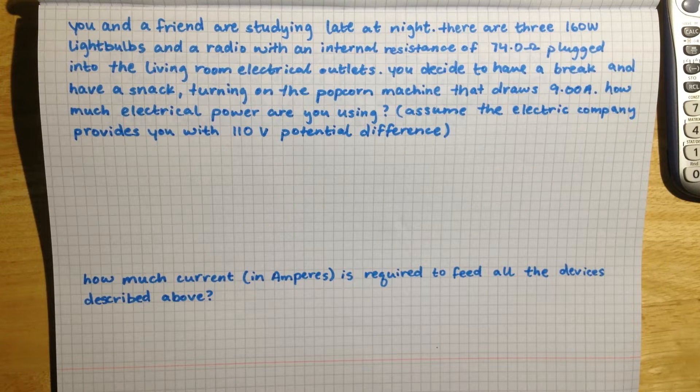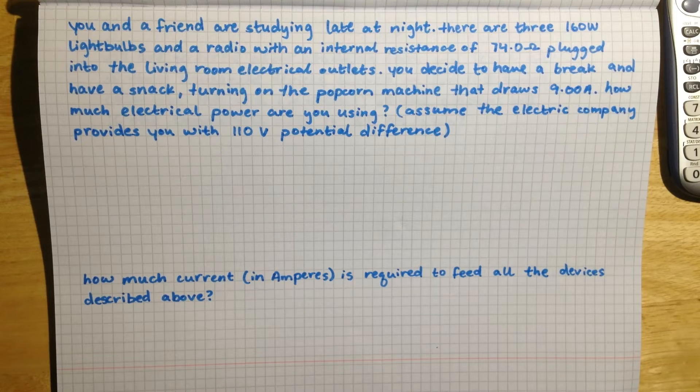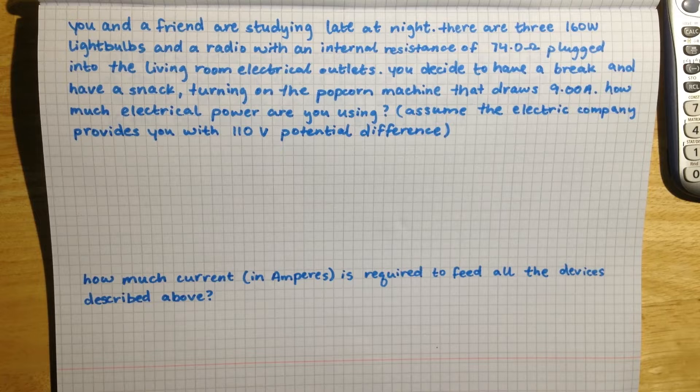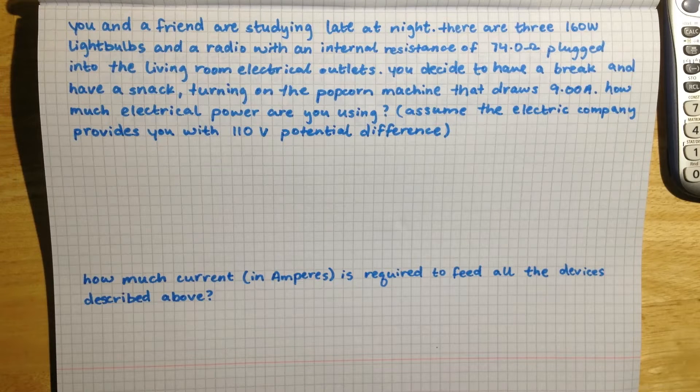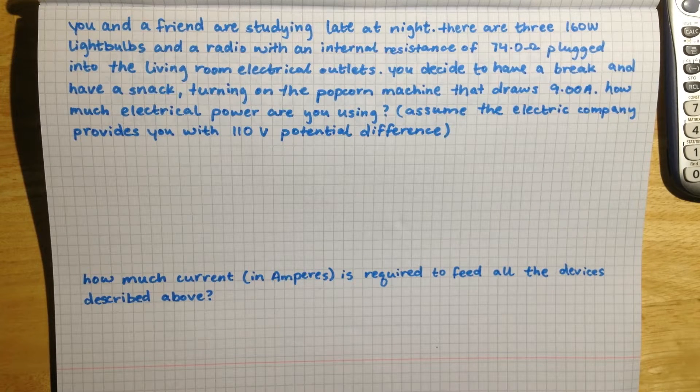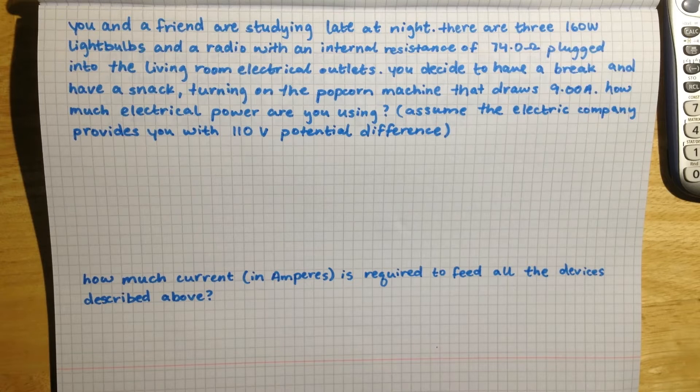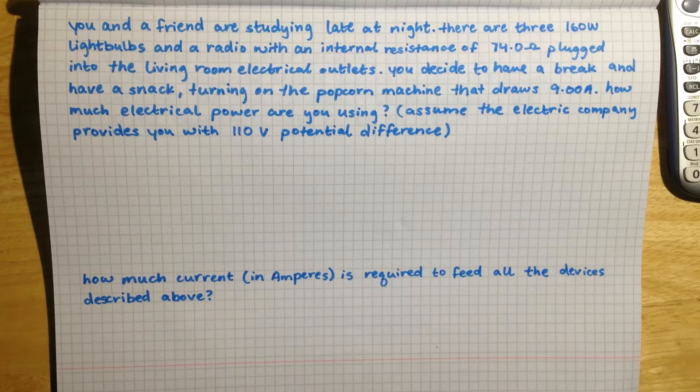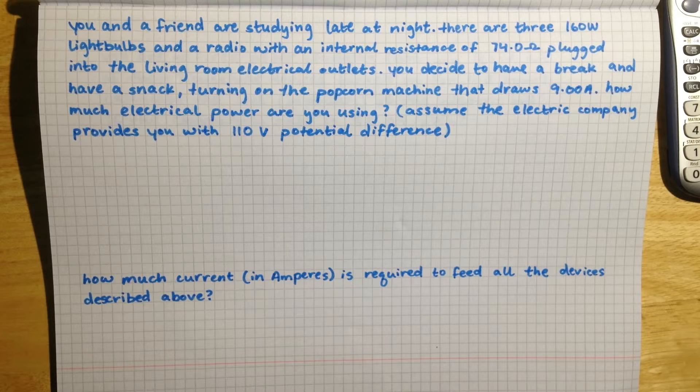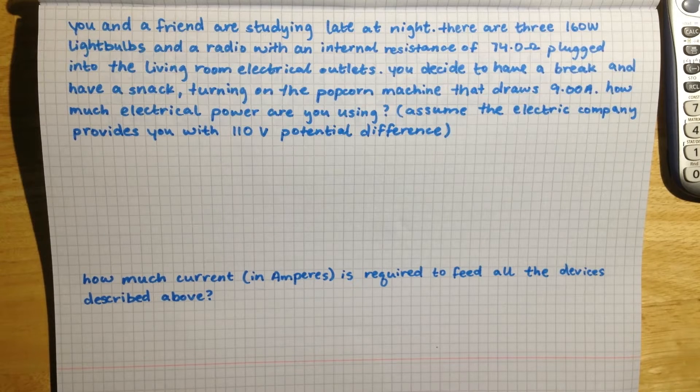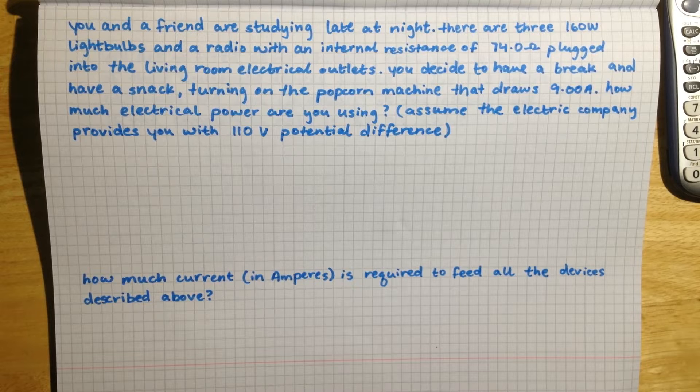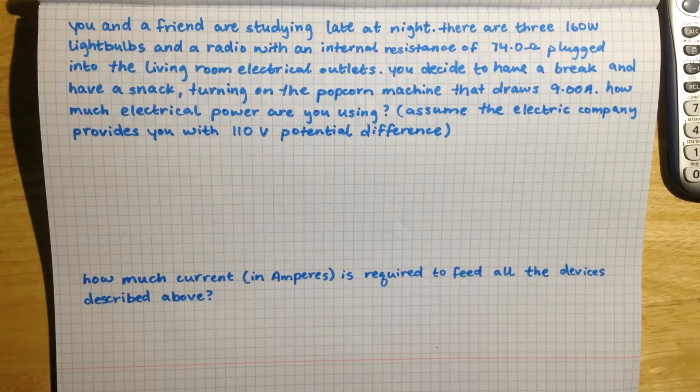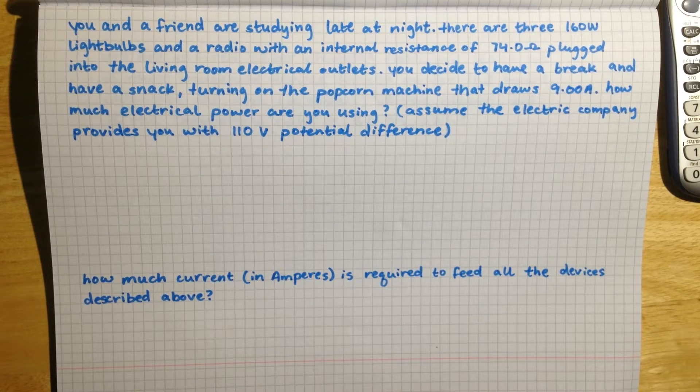You and a friend are studying late at night. There are three 160 watt light bulbs and a radio with an internal resistance of 74.0 ohms plugged into the living room electrical outlets. You decide to have a break and have a snack, turning on the popcorn machine that draws 9.00 amps. How much electrical power are you using? Assume the electric company provides you with 110 volts potential difference.